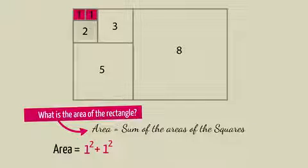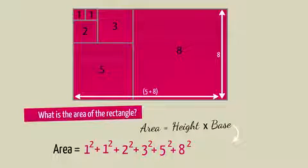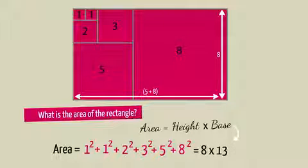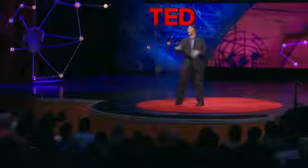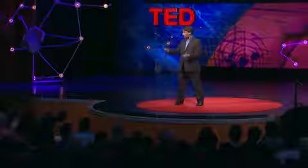Now let me ask you a simple question: what is the area of the rectangle? On the one hand, it's the sum of the areas of the squares inside it — 1 squared plus 1 squared plus 2 squared plus 3 squared plus 5 squared plus 8 squared. That's the area. On the other hand, because it's a rectangle, the area is equal to its height times its base. The height is clearly 8, and the base is 5 plus 8, which is the next Fibonacci number, 13. So the area is also 8 times 13. Since we've correctly calculated the area two different ways, they have to be the same number. And that's why the squares of 1, 1, 2, 3, 5, and 8 add up to 8 times 13.